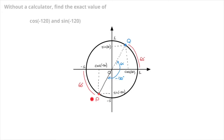Now that we have both P and Q on our unit circle, we compare their coordinates. Since they're both diametrically opposite to each other, their coordinates will also be opposites of each other. Consequently, cosine of negative 120 will equal the opposite of cosine of 60, and sine of negative 120 will be equal to the opposite of sine of 60.